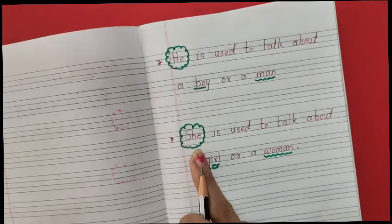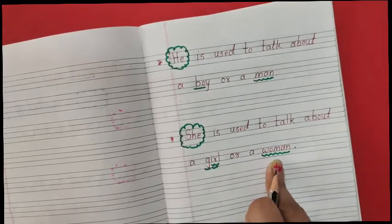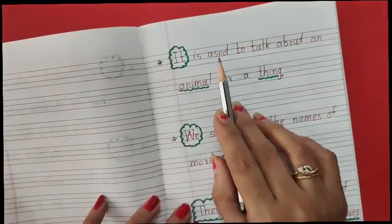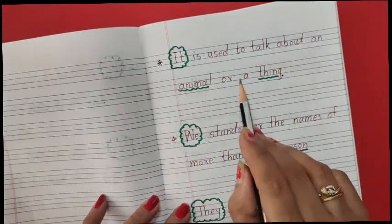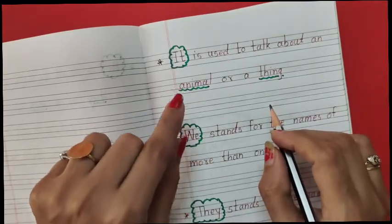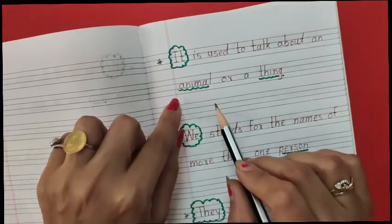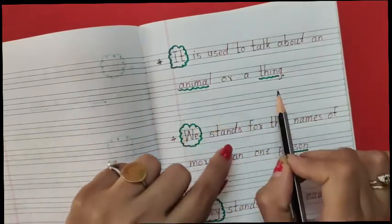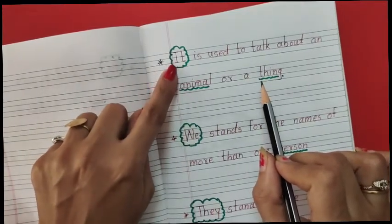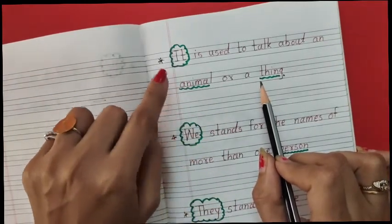Now she. She is used to talk about a girl or a woman. Next is it. It is used to talk about an animal or thing. When we are using it, you have to see if there is an animal or thing. For example, it is a pretty dog. It is a pretty dress.